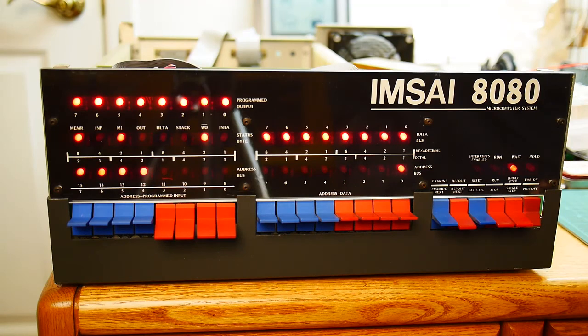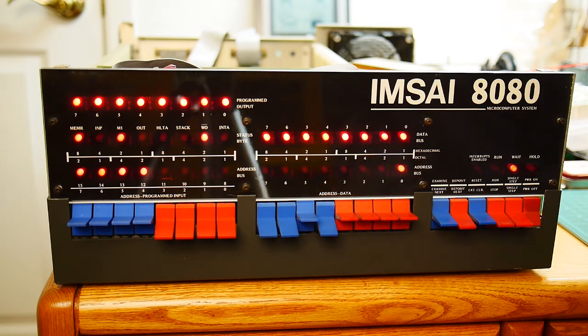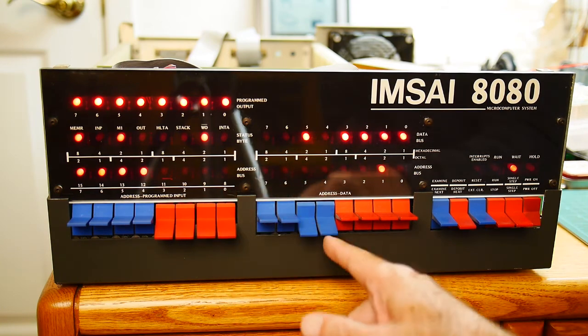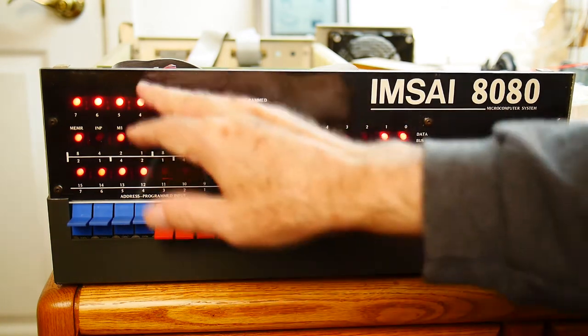And now we're going to complement the data. So the complement instruction is 057. Put that in. And then we'll do an output, 323, to FF, which are the LEDs.